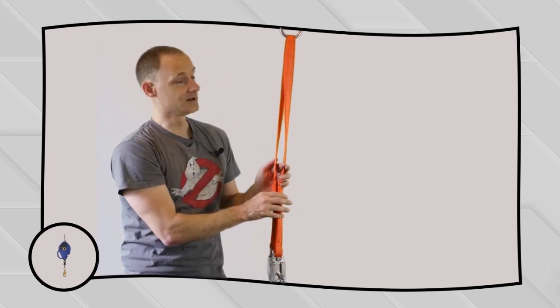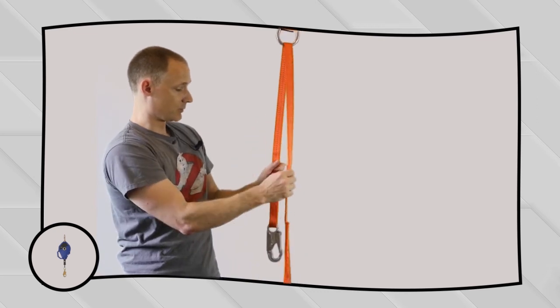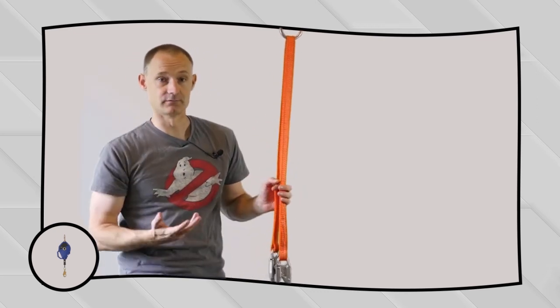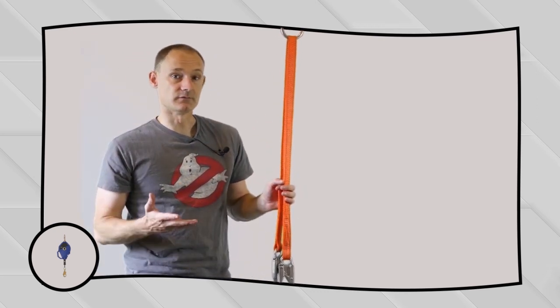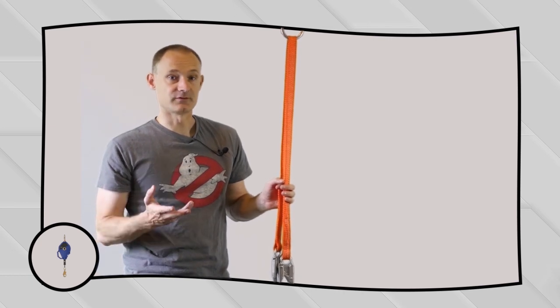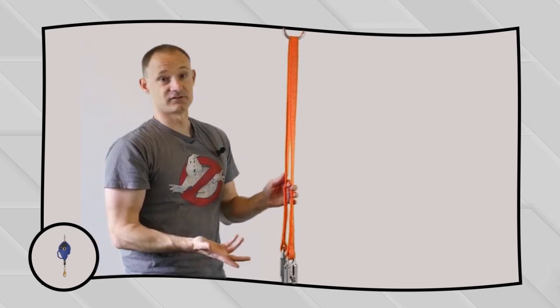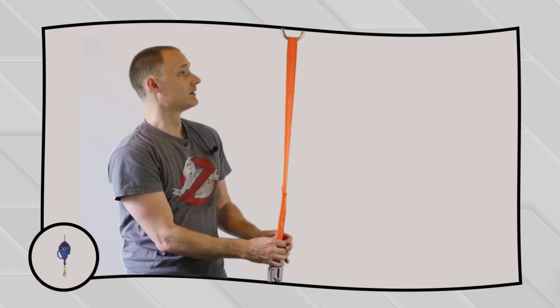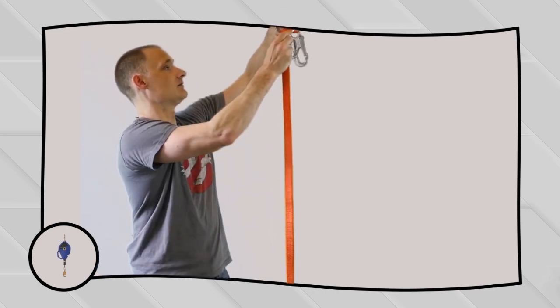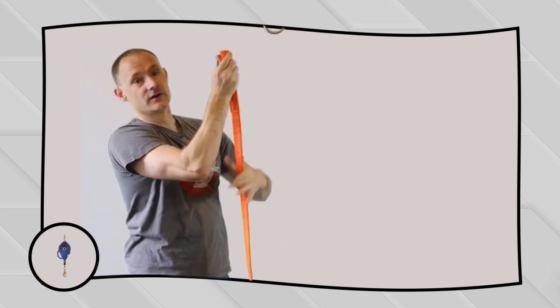And even if it did have a label, it's missing something else. It doesn't have a shock absorber. With no shock absorber, you can't use it for fall arrest. You could still use it for positioning or for fall restraint. But since there's no way to absorb the shock of a fall, you can't use it for fall arrest. Since this isn't a piece of fall protection equipment, we need to get rid of it.